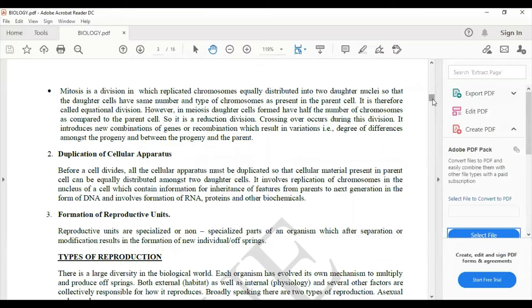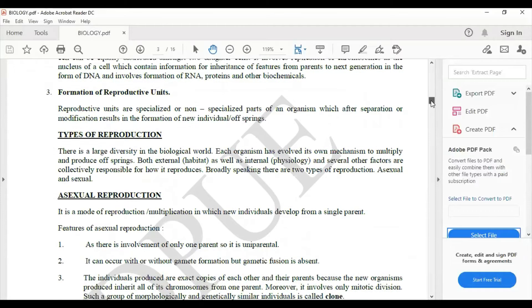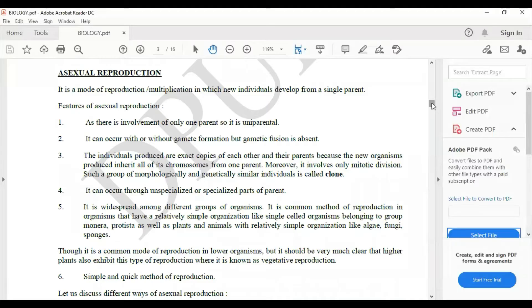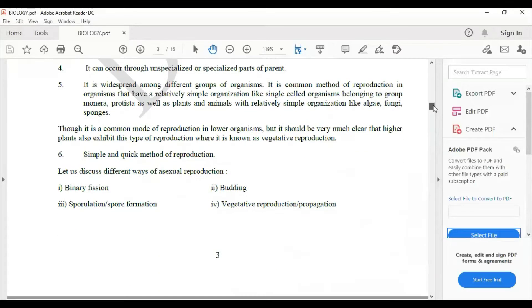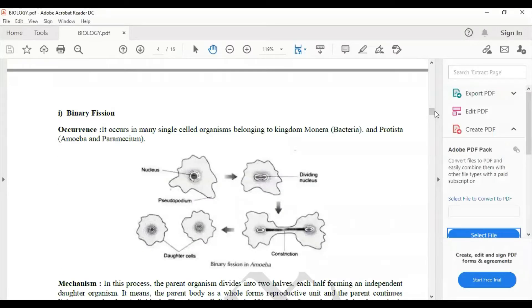Types of reproduction, asexual reproduction - it gives the features of asexual reproduction and then it will give all the types of asexual reproduction one by one. It will explain about binary fission with diagram and their mechanism.